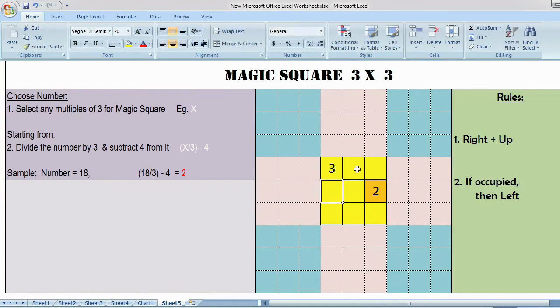Now right plus up, this is the position. I have to match it with the main box. That is 4 here. The next number is right plus up. This is already occupied, so I have to place the number 5 here.